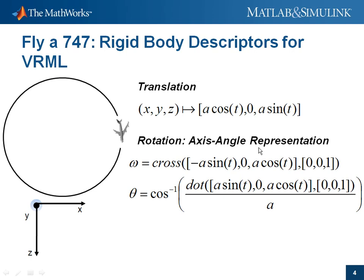The axis-angle representation requires you to specify two things: the vector around which the rotation is taking place, and theta, the amount of rotation around that particular vector. Our strategy is to define this rotation vector as the cross product of the velocity vector and the z-axis. If you take the velocity vector and cross it with the z-vector, you'll always get a vector pointing along the y-axis, and we do indeed see that it is rotating around that particular vector.